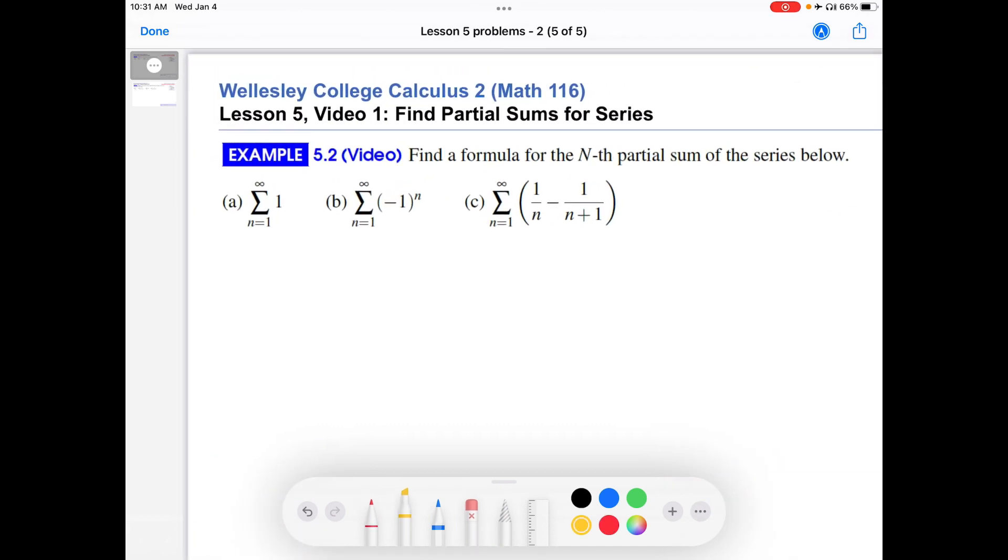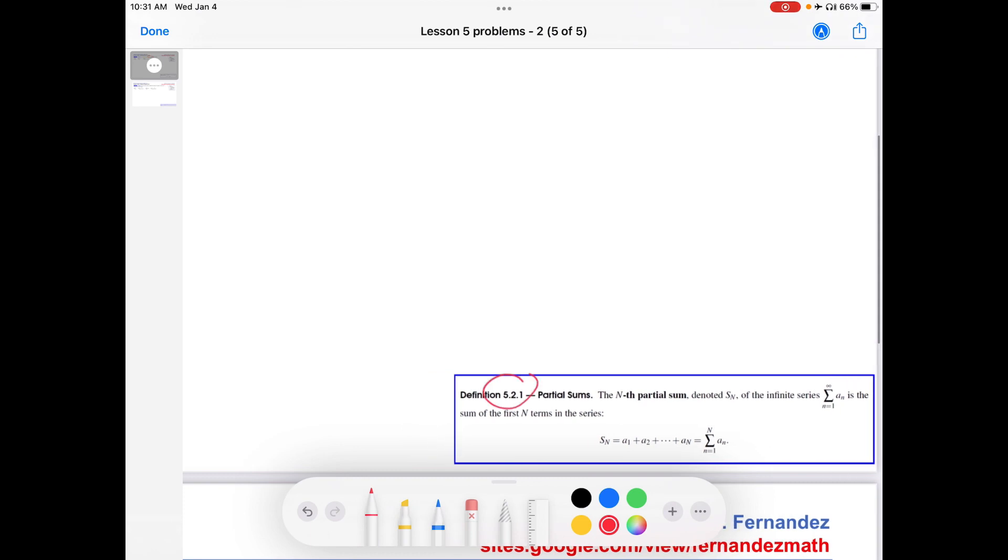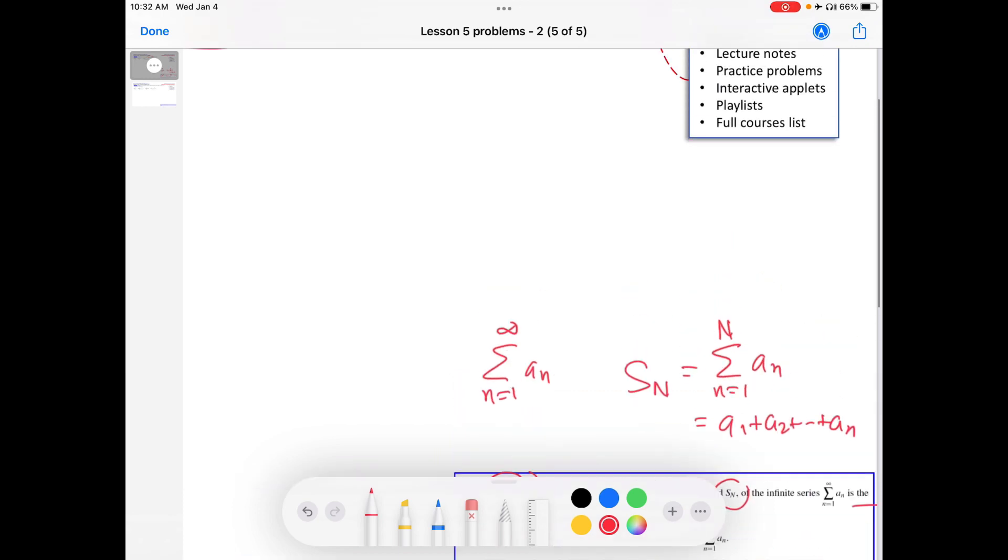What does it say? It says find a formula for the nth partial sum of the series below. Let me just remind you really quickly what the partial sum of a series is. We're talking here about infinite series. The nth partial sum denoted S sub n, capital N, of the infinite series A sub n from 1 to infinity is literally the sum of its first n terms. So S sub n is the sum from n equals 1 to capital N of A sub n. It's A1 plus A2 plus all the way up to A_N.